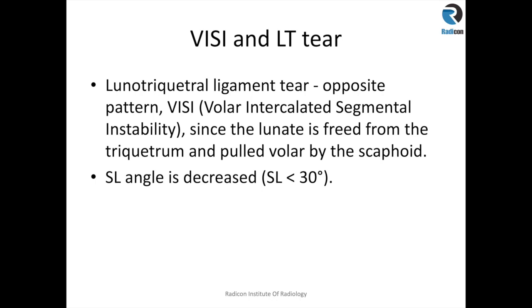VISI is opposite to DISI and stands for volar intercalated segmental instability. Since the lunate is freed from the triquetrum, it is pulled volarly by the scaphoid. The scapholunate angle is reduced; if the scapholunate angle is less than 30 degrees, we call it VISI deformity.